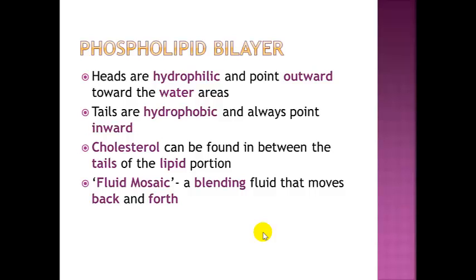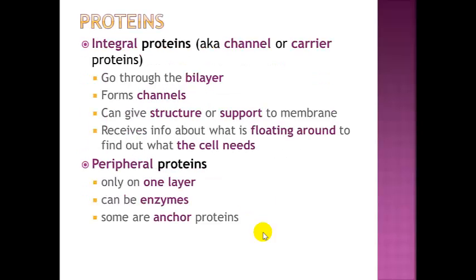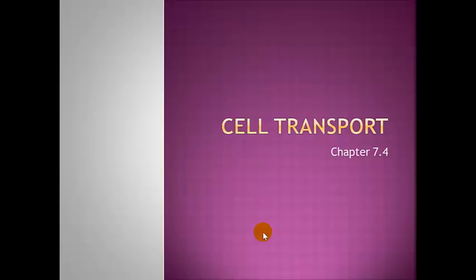There are two types of proteins in the cell membrane. Integral proteins, also known as protein channels or carrier proteins, go all the way through the bilayer. They form channels, give structural support to the membrane, and receive information about the environment to determine what the cell needs. Peripheral proteins, on the other hand, are only in one layer of the phospholipid — they do not go all the way through — and they can function as enzymes or as anchor proteins that give additional structure to the cell membrane.